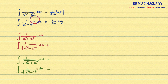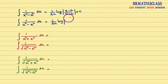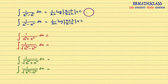Here, x squared minus a squared is there. Whenever you see x squared minus a squared, you write log mod x minus a divided by x plus a, plus c. Whenever you see a squared minus x squared, you do not write a minus x — don't write a minus x. You write a plus x: a plus x divided by a minus x, plus c. So: integral of 1 divided by x squared minus a squared dx is 1 by 2a into log mod x minus a divided by x plus a plus c. Integral of 1 divided by a squared minus x squared dx is 1 by 2a into log mod a plus x divided by a minus x plus c.